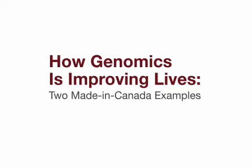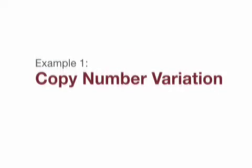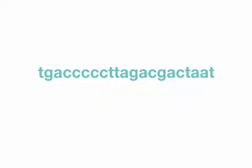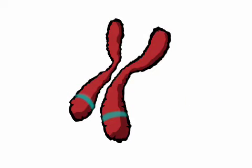How Genomics is Improving Lives: Two Made in Canada Examples. Example 1: Copy Number Variation. Until recently, it was widely accepted that the human genome contains two copies of any given segment of DNA.